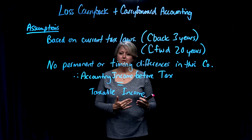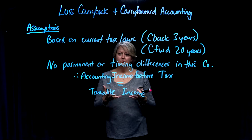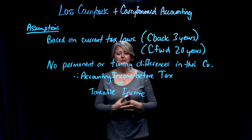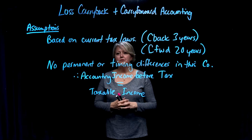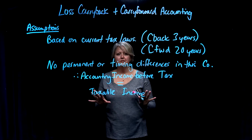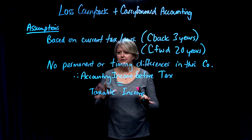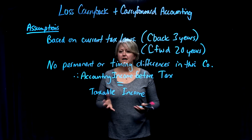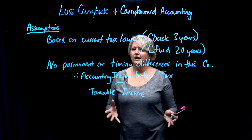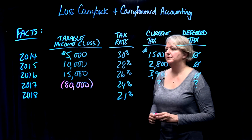You can carry them forward and check every single year for the next 20 years. And as soon as you have a taxable income situation in a year, you can apply the loss against it and reduce how much tax you have to pay in that year. You can do that until you use up your tax loss carry forward or until 20 years runs out, whichever happens first. In this example, I've made a very simple assumption that there are no permanent differences, no timing differences, so there's no deferred taxes in this situation at all. The assumption is that accounting income before tax equals taxable income. So here are the facts for this example on loss carrybacks and carry forwards.